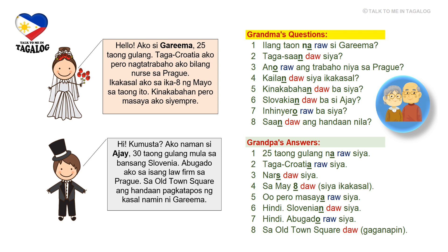Now let's meet the groom: 'Hi kumusta. Ako naman si Ajay, tatlumpong taong gulang, mula sa bansang Slovenia. Abogado ako sa isang law firm sa Prague. Sa Old Town Square ang handaan pagkatapos ng kasal namin ni Garima.' Kumusta means 'how are you,' abogado means 'lawyer,' handaan is 'reception,' pagkatapos is 'after,' and kasal is 'wedding.' So Ajay is a 30-year-old lawyer from Slovenia, and the wedding reception will be at the Old Town Square right after the ceremony.